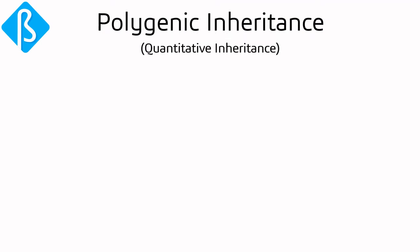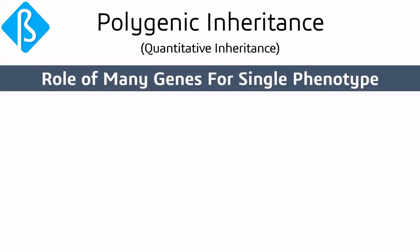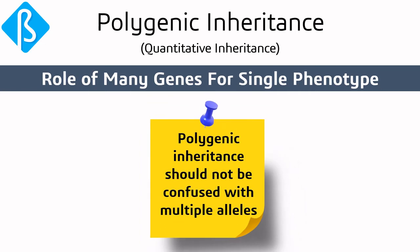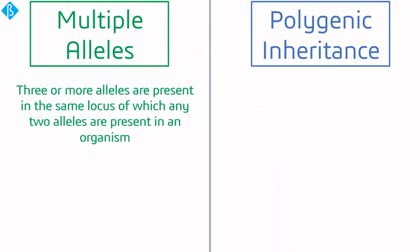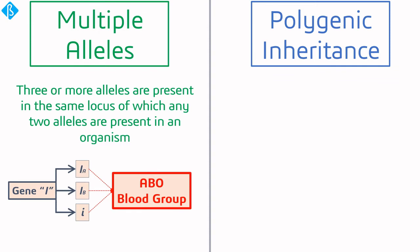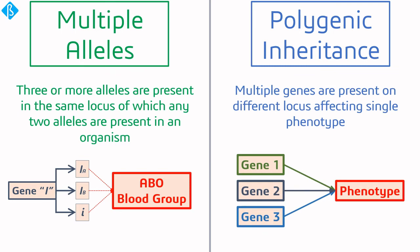Polygenic inheritance is also known as quantitative inheritance, and it shows the role of many genes for a single phenotype. Polygenic inheritance should not be confused with multiple alleles — in multiple alleles, three or more alleles are present at the same locus, of which any two are present in an organism, for example, the ABO blood group system. In polygenic inheritance, multiple genes are present at different loci affecting a single phenotype. Multiple alleles are about alleles; polygenic inheritance is about genes.